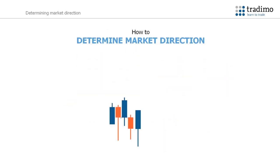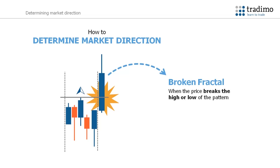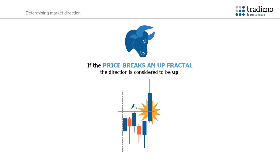As a trader, you can use fractals to determine market direction. A very simple method is to look for a broken fractal. A fractal is broken when you have a completed five candle pattern and price then breaks the high or low of the pattern. If price breaks an up fractal, then the direction of the market would be considered to be up, and you would be only looking for buying opportunities.